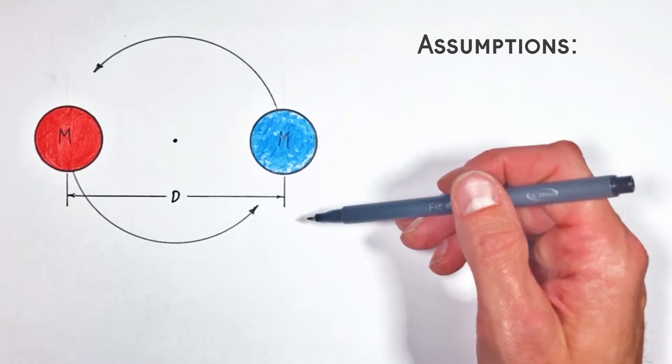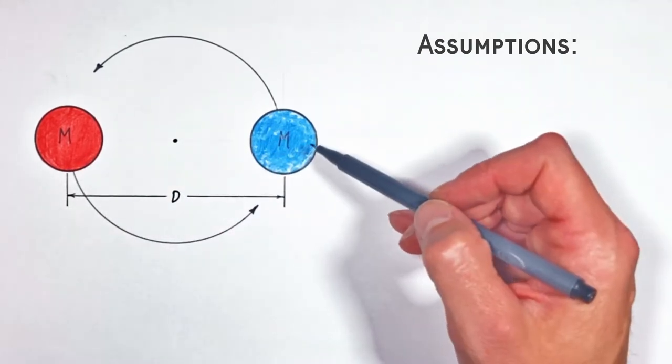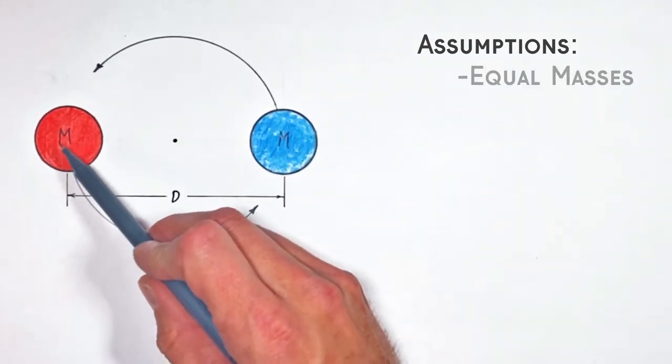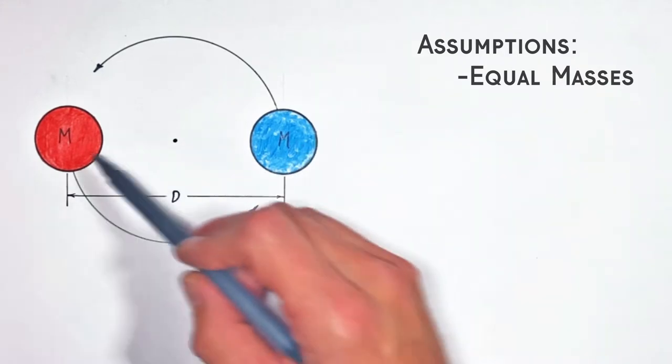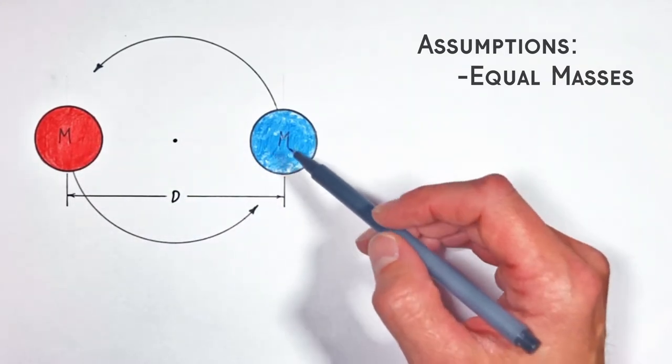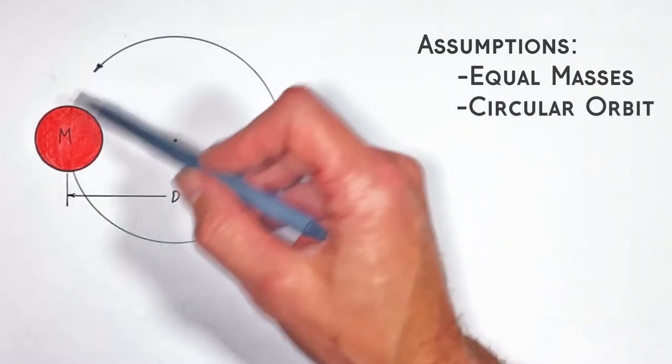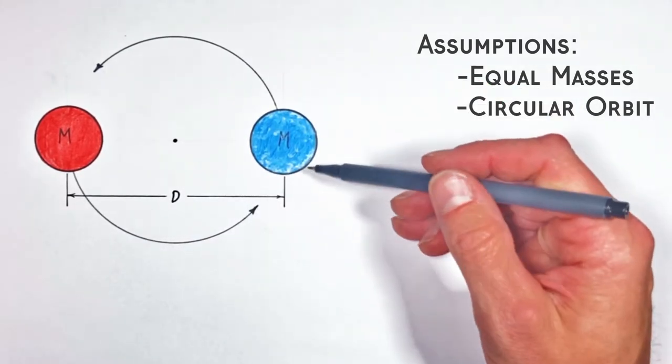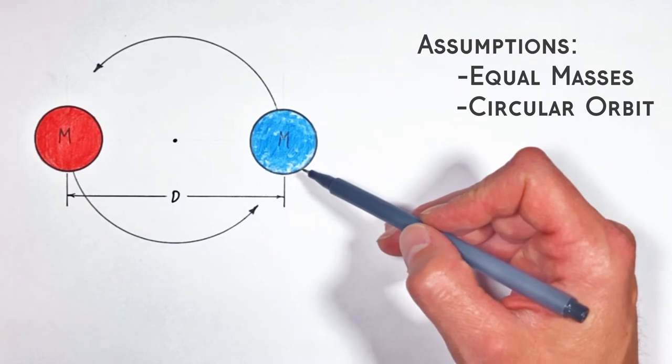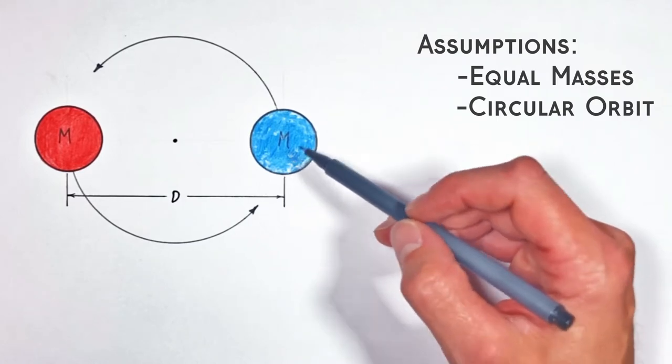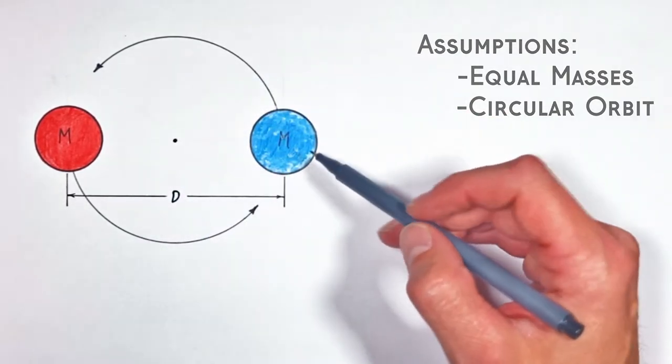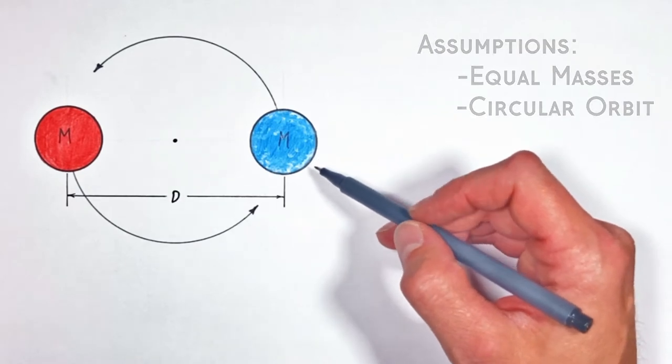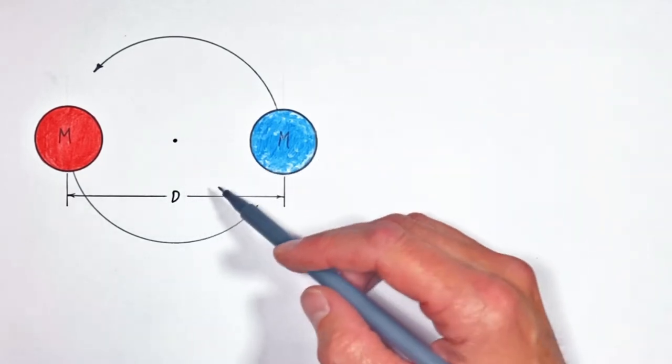Now what we're looking at today is a simplified case of a binary star system in that we're going to say that the two masses are equal to one another and we're also going to say that these two masses are in perfectly circular orbits. I know that's not particularly realistic for those of you who are getting into astrodynamics, but this is a typical example that you'll see when you first start talking about centripetal forces and Newton's law of universal gravitation.